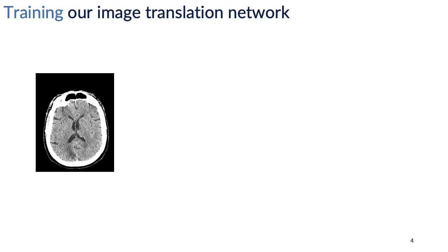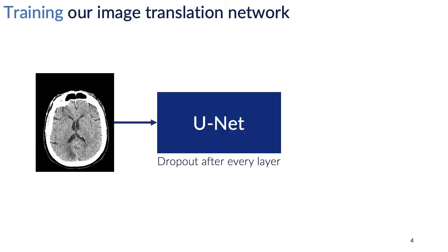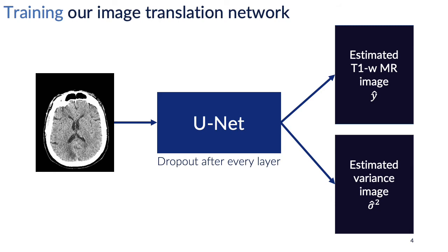To get voxel-wise estimates of uncertainty in our image translation task, we'll need to modify the training setup and neural network architecture a little. We have a CT image as input going into a U-Net that has been modified to have dropout after every layer, and importantly outputs two images instead of only one. The first image represents the synthesized target image — a T1-weighted MR image in our study — and the second image represents the voxel-wise variance of the output. We need the variance to calculate aleatoric uncertainty.